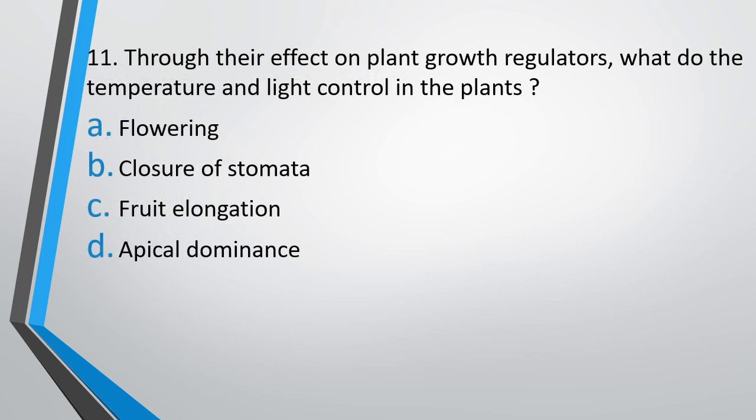Question 11: Through their effect on plant growth regulators, what do temperature and light control in plants? Options: flowering, closure of stomata, fruit elongation, or apical dominance. The correct answer is Option A — temperature and light control the process of flowering.